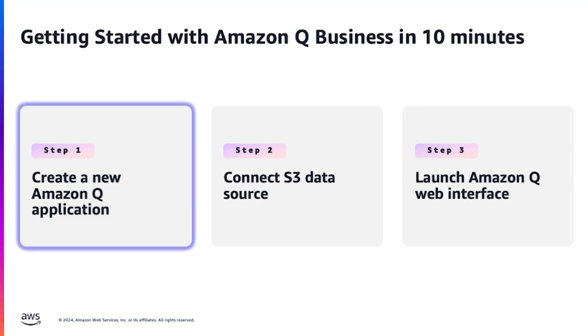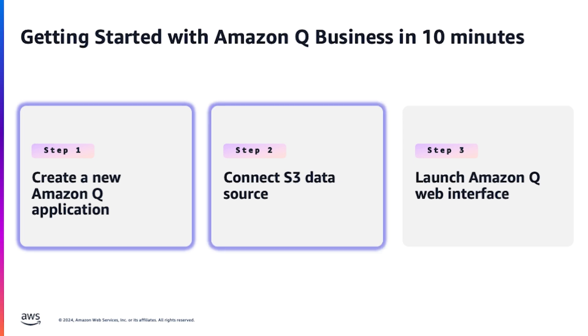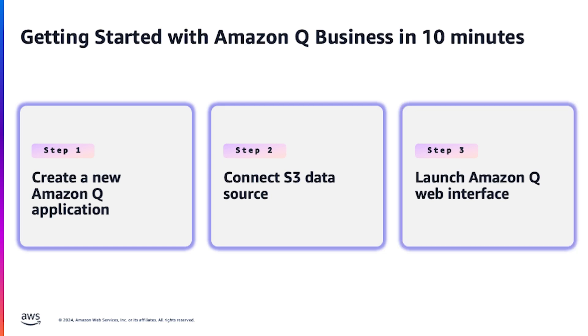In this demo, we're going to do that in three steps. Step one, we're going to launch a new Amazon Q Business application in the AWS console. Step two, we're going to connect that application to an S3 bucket using one of over 40 plus pre-built data connectors. And finally, in step three, we're going to launch a pre-built web-based interface that you can use to begin prompting your data.